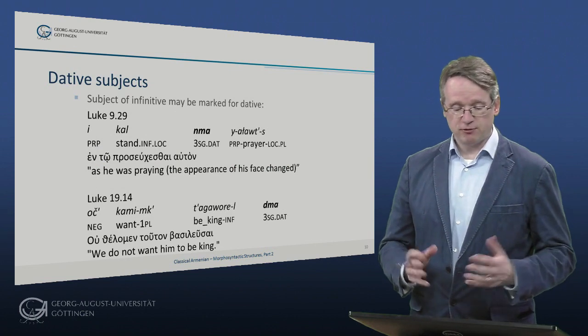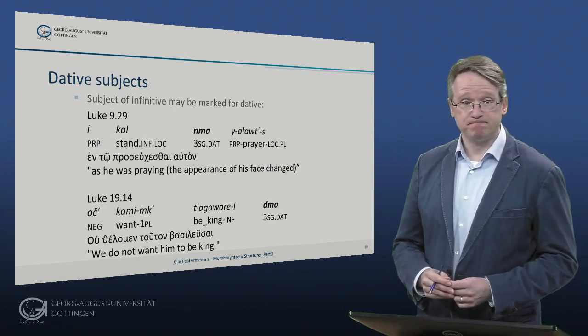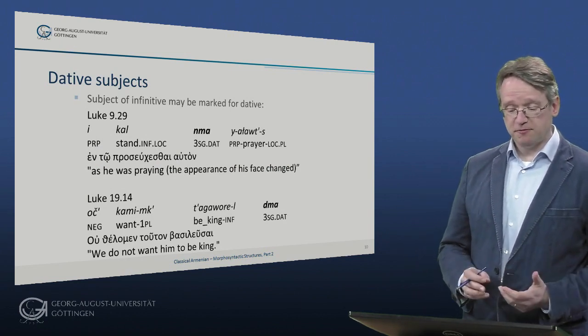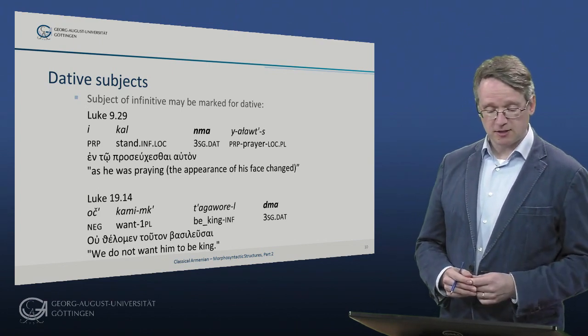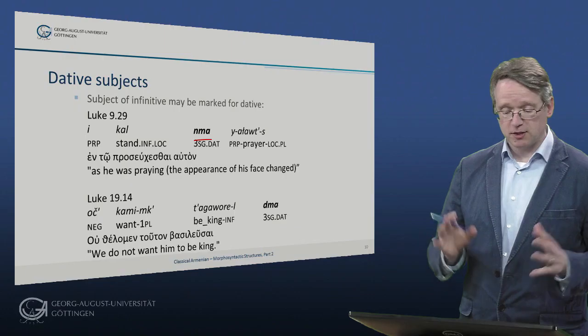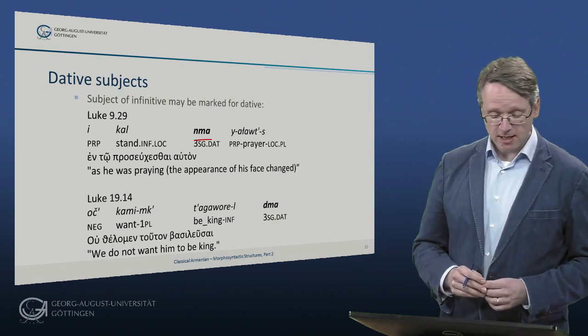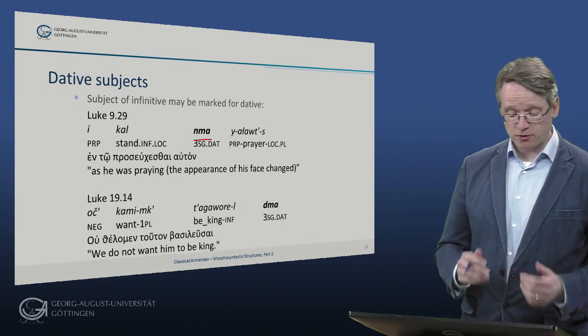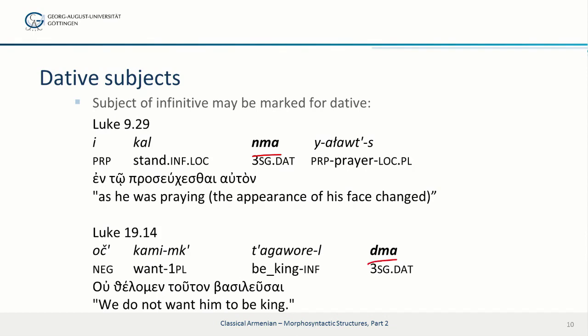Now, the second interesting point where Armenian differs are dative subjects in infinitive constructions. The subject of an infinitive may be marked with a dative case. So, let's have a look at these examples in Luke 9:29: i kaṙnel nma jaṙotiws, 'as he was praying', so literally 'while he was standing in prayer'. And here, the subject of the infinitive kaṙnel is marked for dative. In the Greek, of course, this works differently — I've given you the Greek version for comparison, so that you can see that this is not a calque of the Greek construction itself. In Luke 19:14, there's a similar instance, 'we don't want him to be king', where we also have a subject marked for dative, and that is the subject of the infinitive tagavorel 'to be a king'.